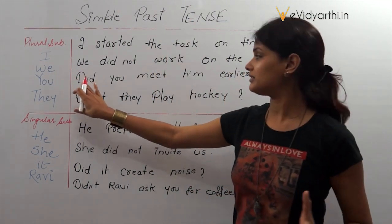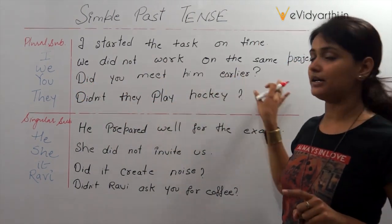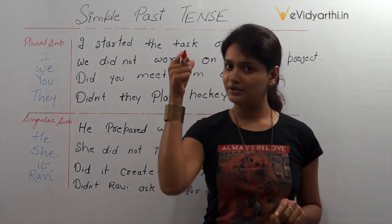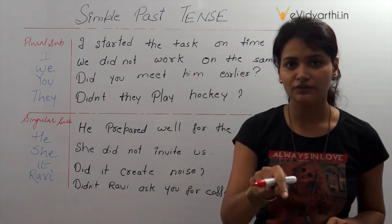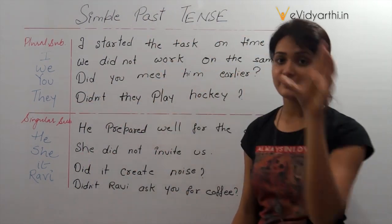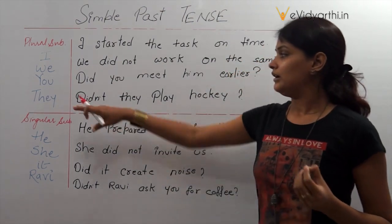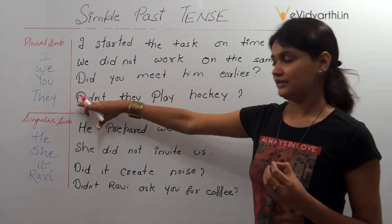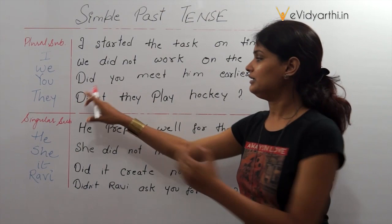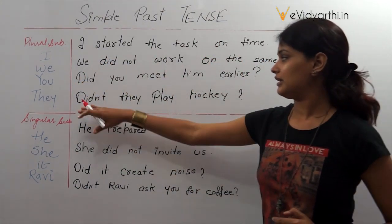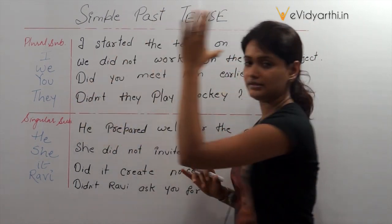When asking a question: 'Did you meet him earlier?' — first form of the verb. Did you meet him earlier? Did you see him earlier? Did you finish your work? Now asking a question with a negative expression: 'Didn't they play hockey?' I am using 'did not' or 'didn't' at the head of the sentence. Didn't they play hockey? The important thing is the first form of the verb with 'did'.